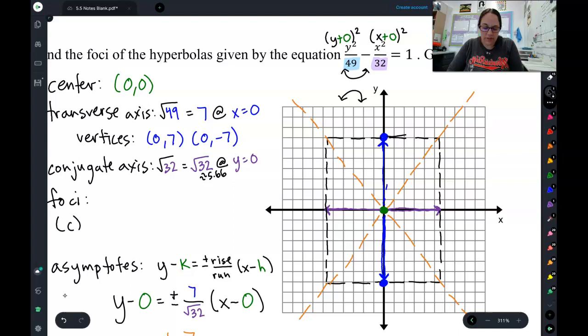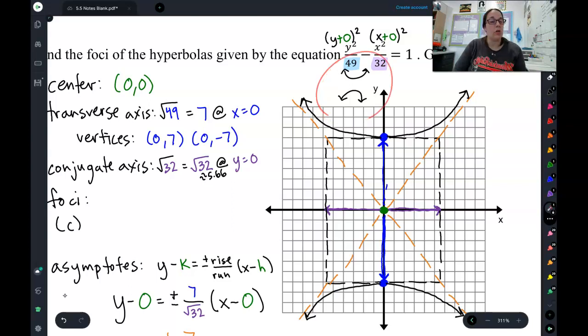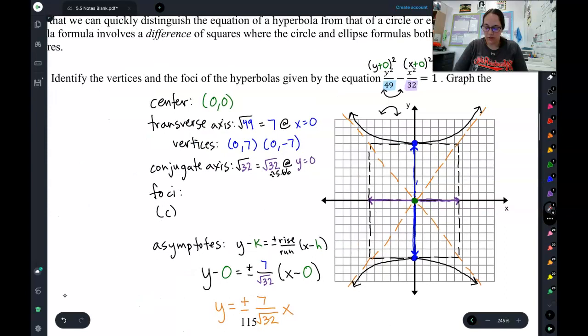Remember, they need to go through the vertices and follow your asymptotes. Through the vertices, follow your asymptotes. And we can double check, we said that our branches should go up and down in the beginning. They do indeed go up and down, so so far so good.